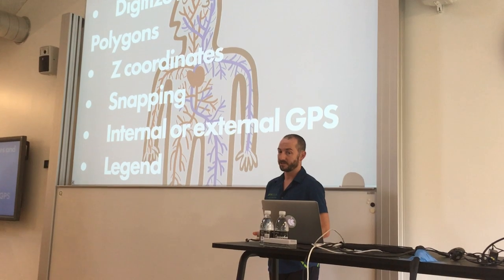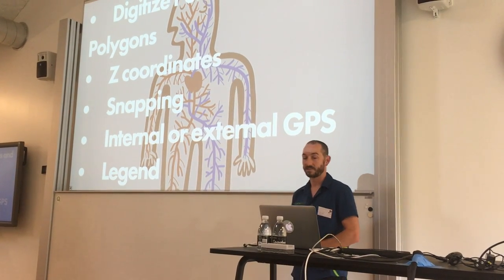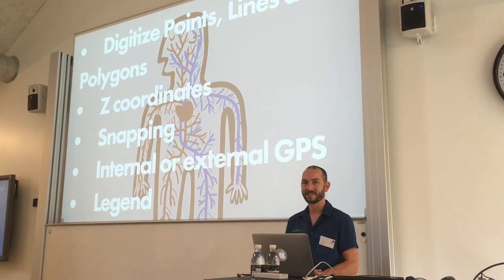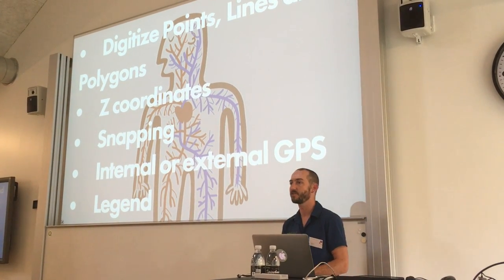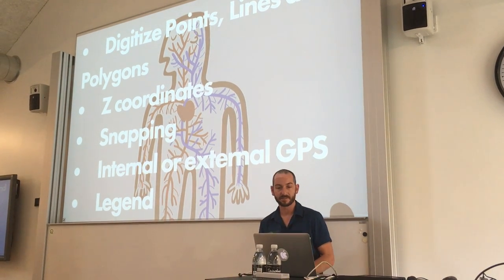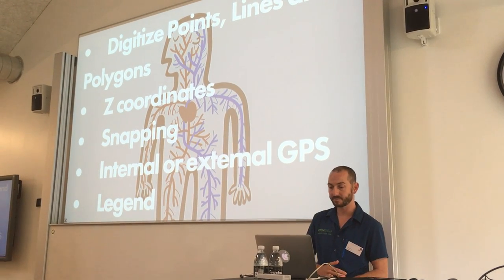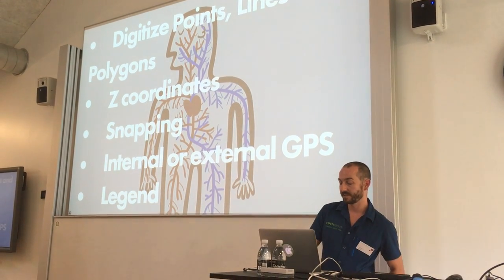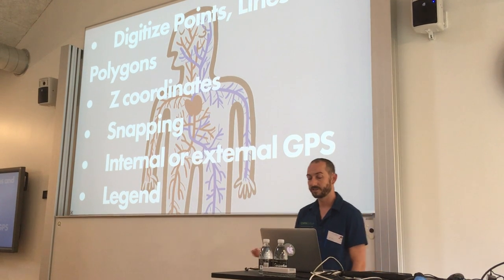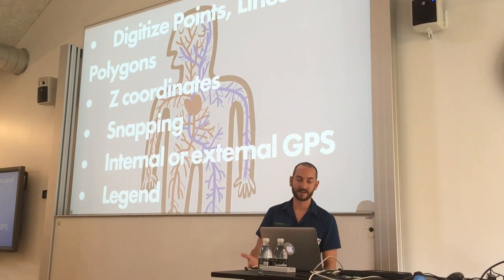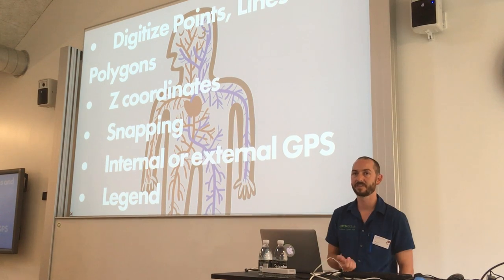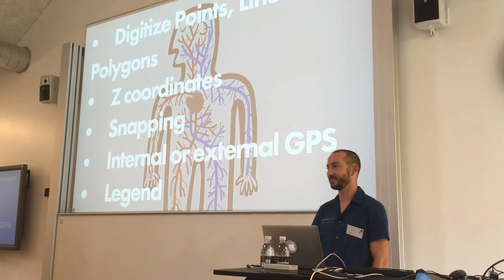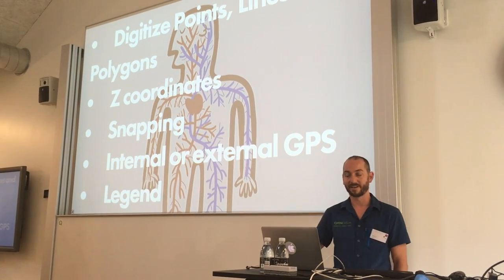Last time I was here you could just digitize points, but now you can also digitize lines and polygons. For a couple of weeks we can now also directly use coordinates delivered by a GPS or positioning device. You can snap to existing features, attach higher-precision GPS devices, and there's a legend where you can see what classes you have in your data.